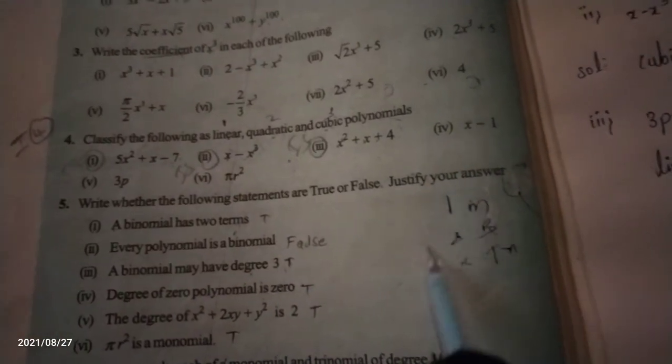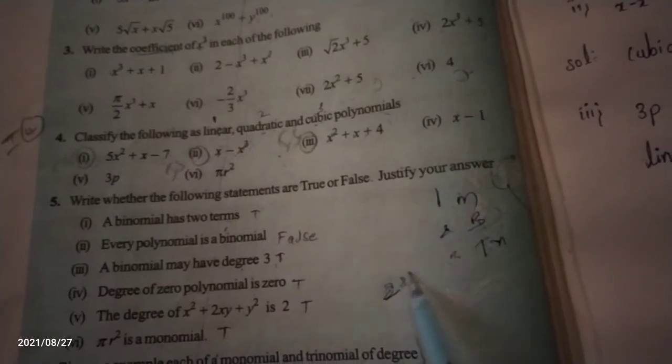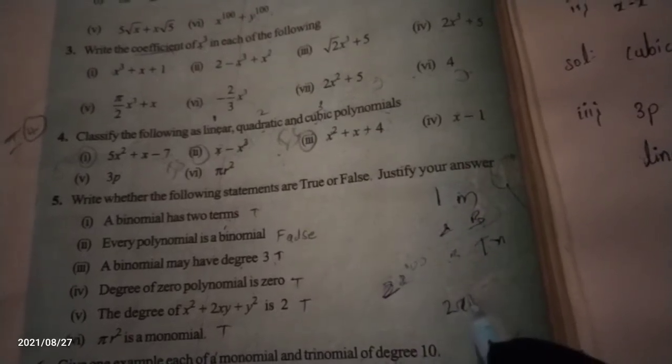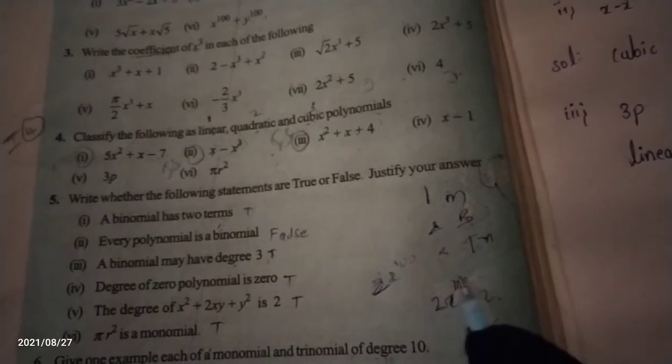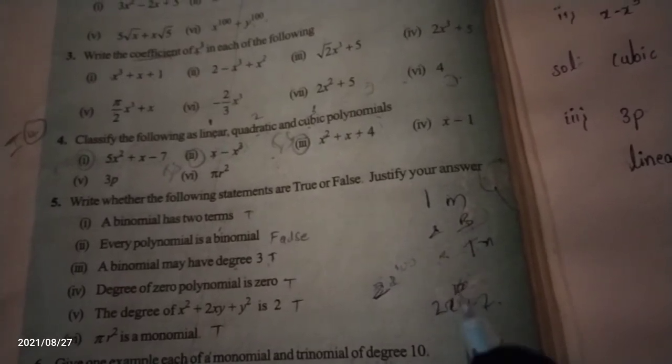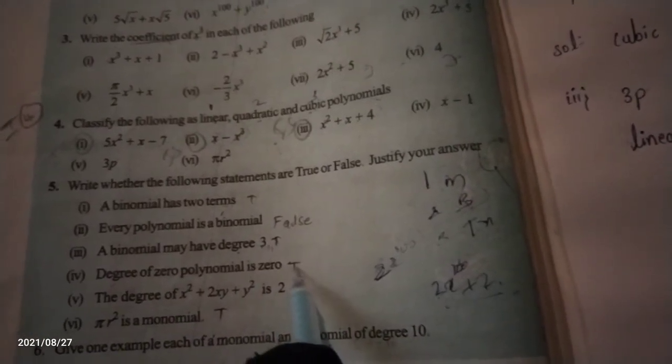Third statement: a binomial may have degree 3 — that is true. A binomial contains two terms. We cannot restrict how many degrees it will have; it can be 100 also. The term count will be two but the power can be anything — that condition is not fixed. Fourth statement: the degree of the zero polynomial is 0 — that is true.